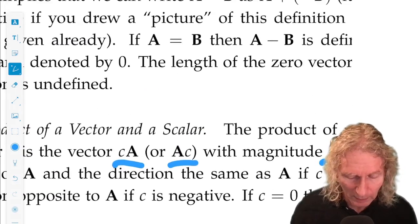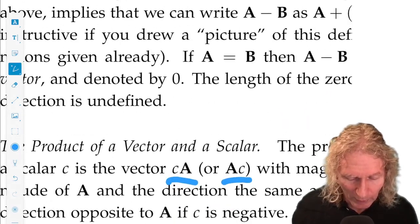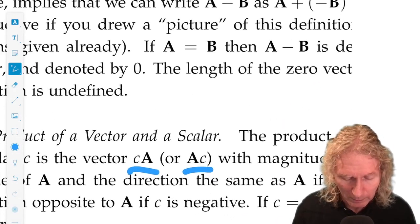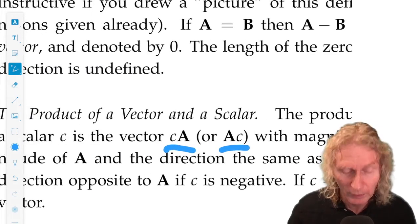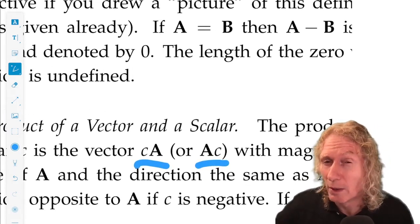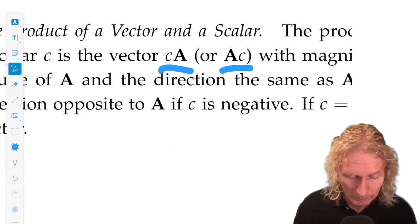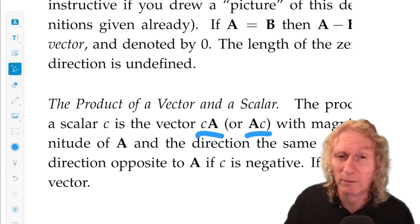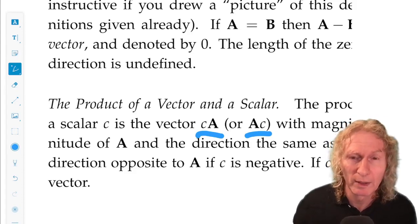One thing I didn't say is just above when we're looking at the difference of two vectors. If A equals B, then A minus B is the zero vector. The zero vector has length zero, but it doesn't have a direction. Its direction is undefined. We just call it zero. And the context will be clear whether it's the number zero or the vector zero.